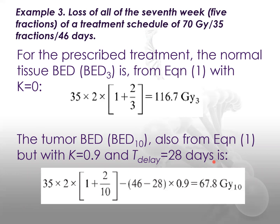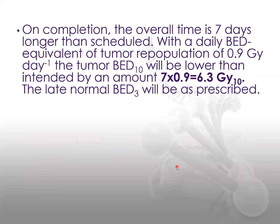The second-to-last example is loss of all seven-week treatments. There is no way to cover this by treating on Saturday or BID, so BED calculation has to be done. The original BED of the normal tissue is 116.7 Gy, and the tumor BED would be 67.8. The time factor is incorporated — 46 is the original day count, with a recommended T-delay value of 28 days, and a K factor. On completion, the overall treatment time is seven days longer than scheduled. With a daily BED equivalent to tumor repopulation of 0.9 Gy, the tumor BED will be lower than intended by 6.3 Gy. The late normal tissue BED will be as prescribed.